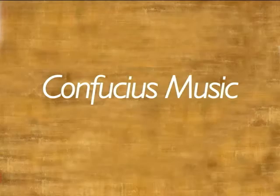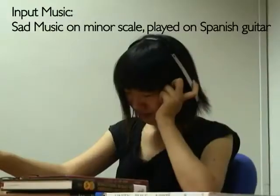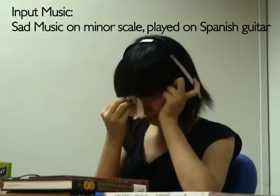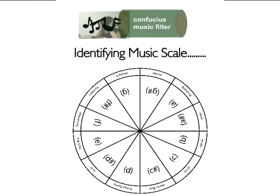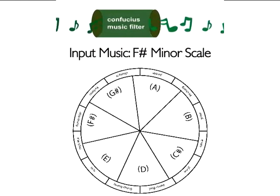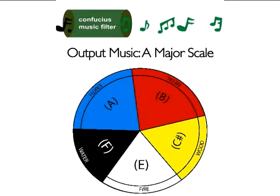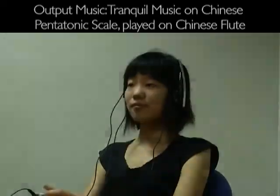The Confucius interest in music is due essentially to its educational and ethical motivations. The Confucius filter works by identifying the scale of the input music based on a probabilistic model. It then transforms the music into the Chinese pentatonic scale by restoring semi-tone notes to full tones.